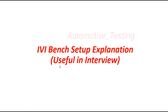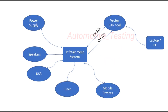Many of you have asked about this bench setup, so let's get started. Here you can see the IVI system, which is the central part, and to the IVI there are many components connected. An IVI system, short for In-Vehicle Infotainment, is a central hub in modern vehicles that combines entertainment, navigation, connectivity and more into one user-friendly interface. You can see a mobile device is connected here.